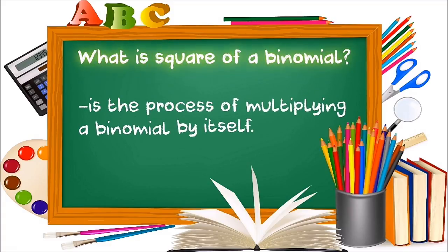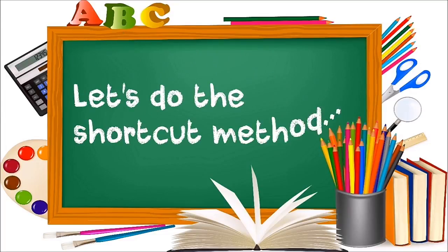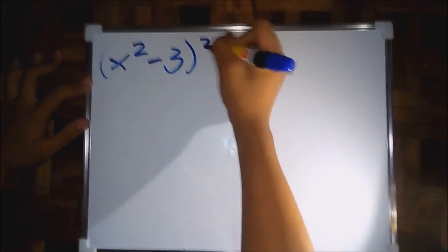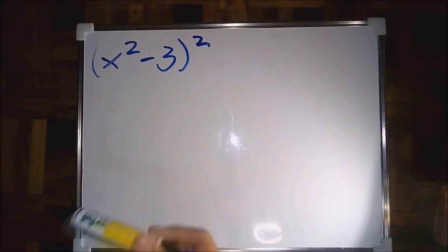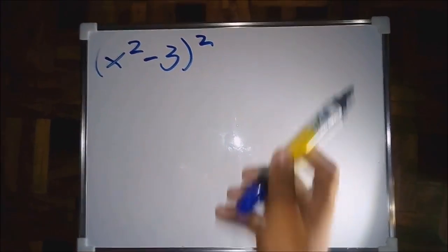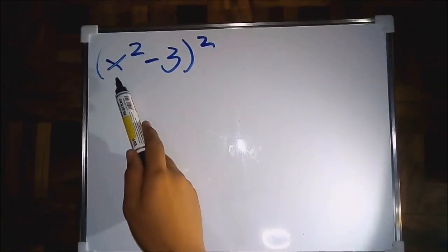Now let's have an example. For example, the quantity of x squared minus 3, squared. The first step is let us first identify the terms in this expression. The first term in this expression is x squared, the second term is negative 3.